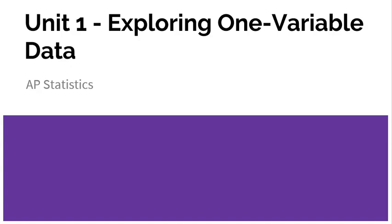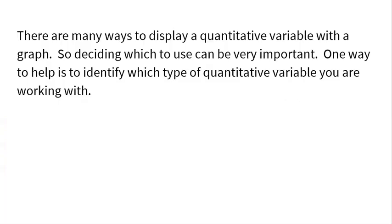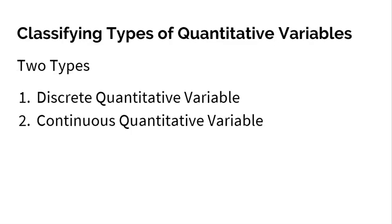Here we are again in Unit 1, exploring one variable data. This video is for topic 1.5, representing a quantitative variable with graphs. There are many ways to display a quantitative variable with a graph. Remember, for categorical you've got bar charts and pie charts, but for quantitative data you've got a couple different more. Deciding which to use can be very important, so one way to help us is to identify which type of quantitative variable you are working with.